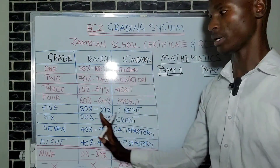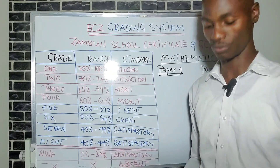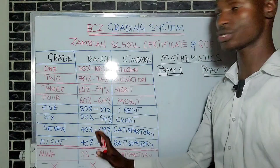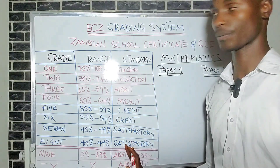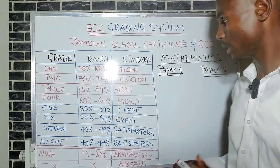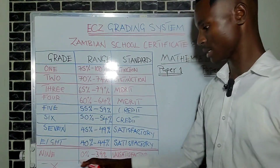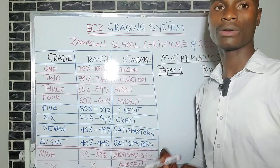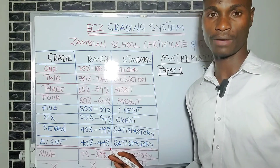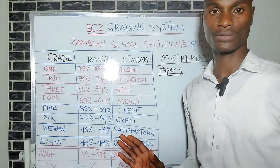Looking at this table, this is the ECZ grading system used in Zambia. We have columns for grade, range, and standard. Starting from the bottom: where you see 'XX,' it is written 'absent' on your certificate — it means you were absent for that subject. You registered it but you didn't write the exam.